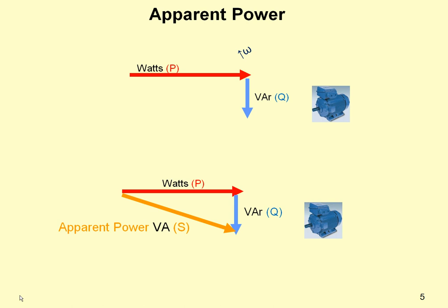Although the inductive part does no work, it still draws current, just like in the real power part. The real power and wattless power combine to produce apparent power. The apparent power is measured in VA and is represented by the symbol S.